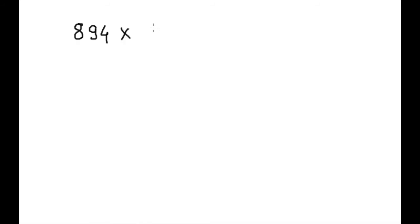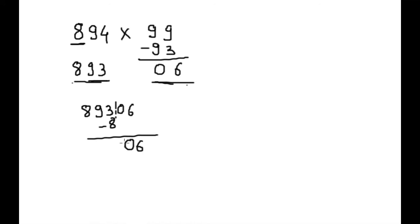894 into 99. Step 1. Subtract from 1. 893. This 93 we will subtract from here. 6 and this is 0. So we will write both combined. 893 and 06. Now this 8 we will subtract from this 3. So 60 and this is 588. This is our answer. So next example.